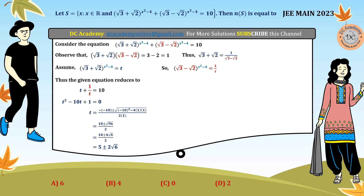Now we are looking to find the value of x, so we rewrite the solutions in square form so that we can equate the powers. We rewrite t as 3 + 2 ± 2√2·√3, which can be written as (√3 ± √2)². So the solutions of t² − 10t + 1 = 0 are expressed in square form.